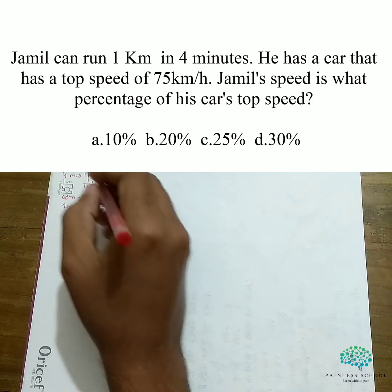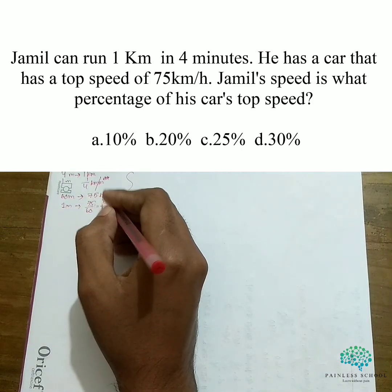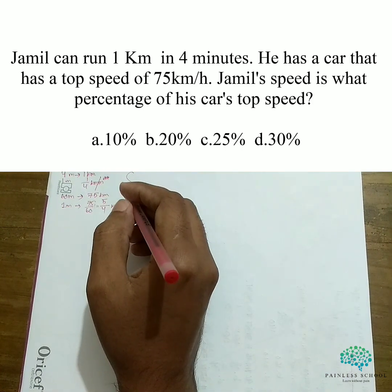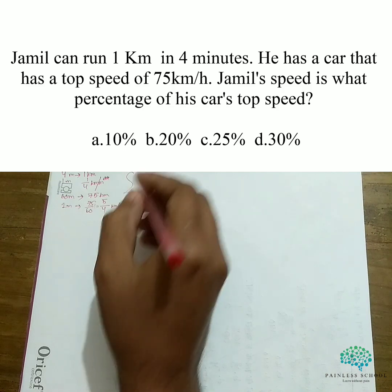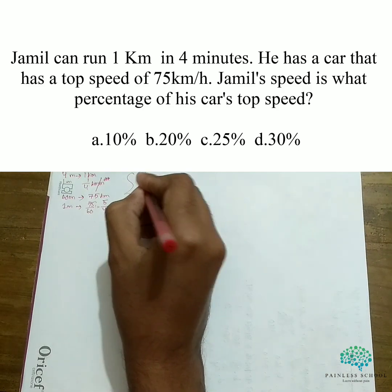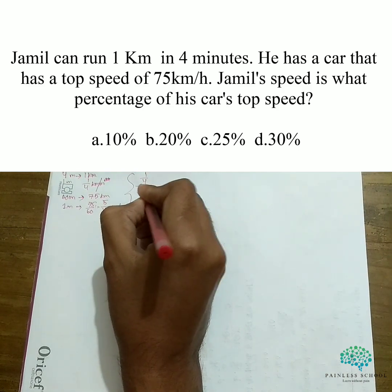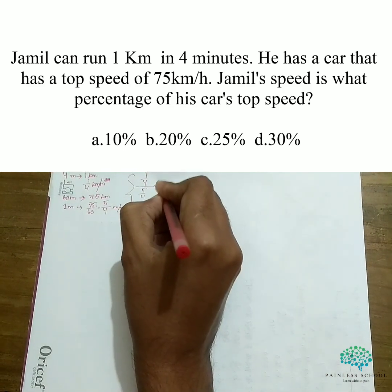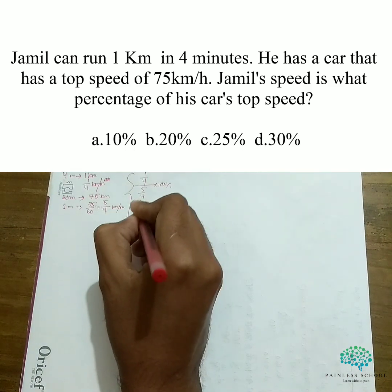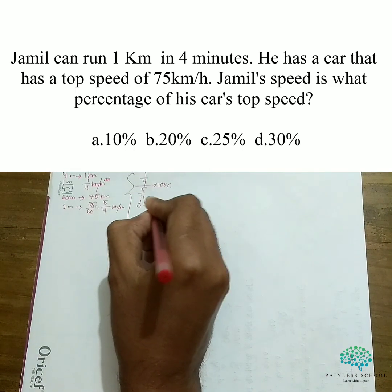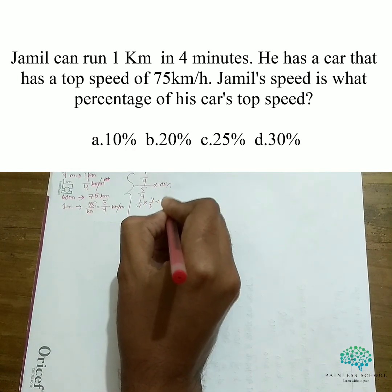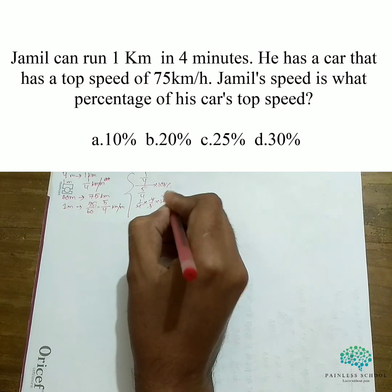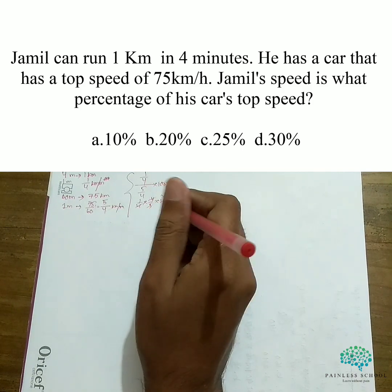Now we find what percentage his running speed is of the car's speed. So it is 1/4 divided by 5/4, into 100%. That means 1/4 multiplied by 4/5 into 100%. The answer is 20%.